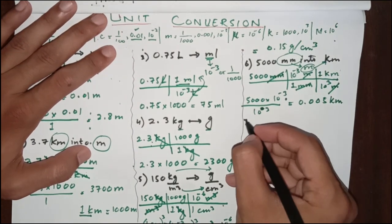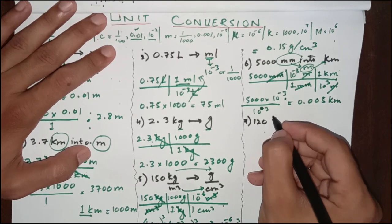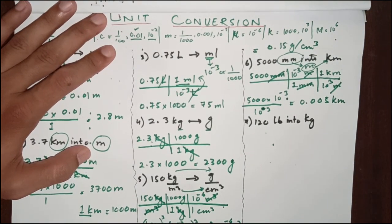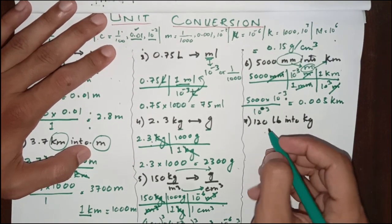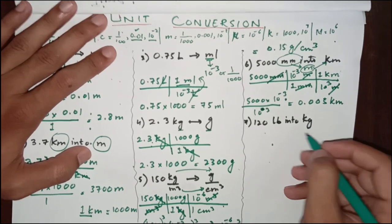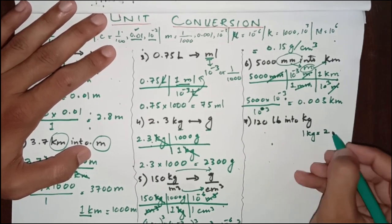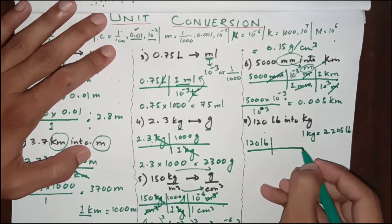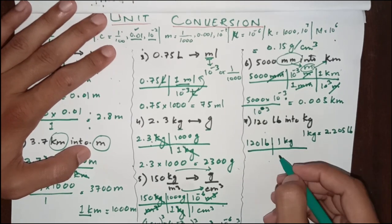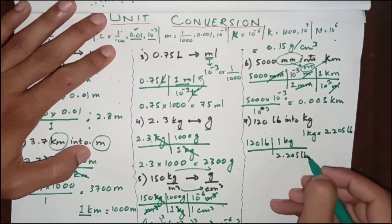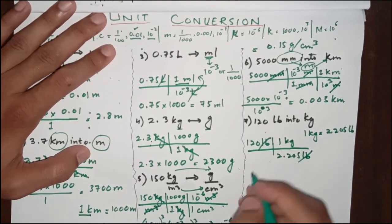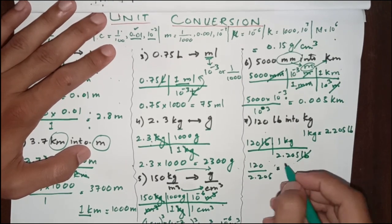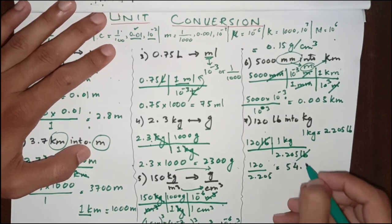Another case where we use a determined relation rather than prefixes: convert 120 pounds into kilograms. As is common practice, 1 kg equals 2.205 pounds. We use this relation directly — writing kg on top and pounds below so that pounds cancels with pounds — and our answer is in kg. So 120 divided by 2.205 gives 54.421 kg.